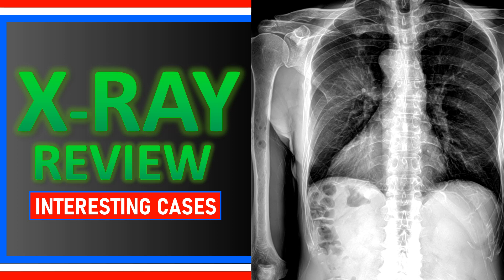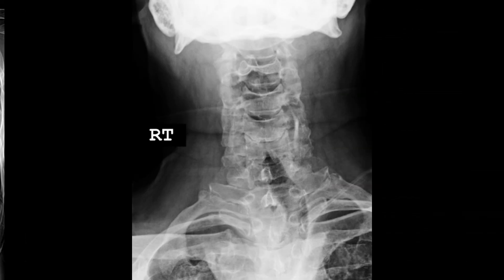Welcome to X-ray review. In this video we're going to go through multiple interesting cases. On this frontal lower cervical view there is a focal deviation of the tracheal air shadow to the left, with an increase in density in the right lung apex. This must be followed up with dedicated chest imaging, as one of the many differentials includes an aggressive Pancoast tumor.